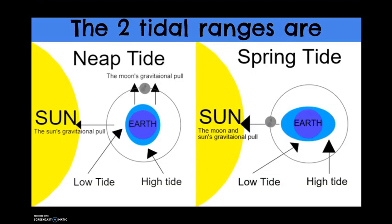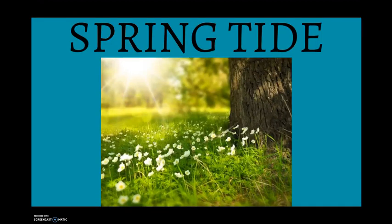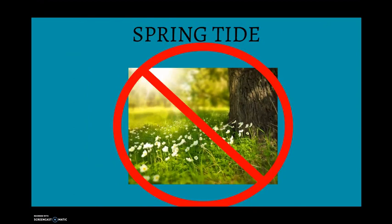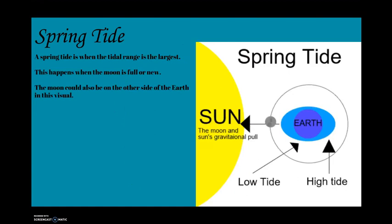There are two types of tidal ranges: neap tide and spring tide. Spring tide — and this has absolutely nothing to do with the season spring — is when the tidal range is the largest, which means the high tides are very high and the low tides are very low. You might also hear this described as the tides being very extreme. This happens when the moon is in either the new or full phase, which means it also happens twice a month. The moon could also be on the right side of the earth in this visual, but it happens both ways.